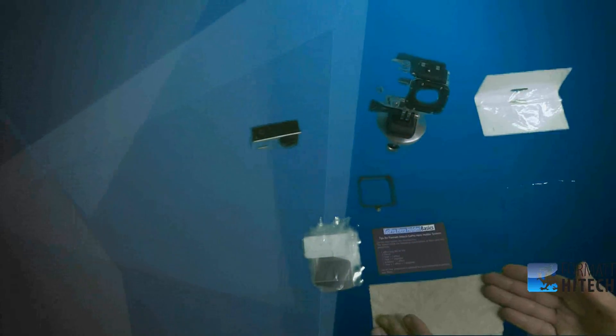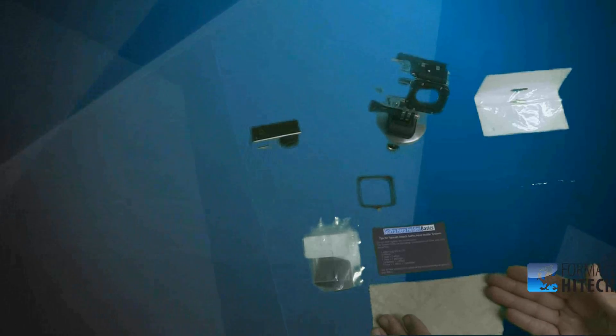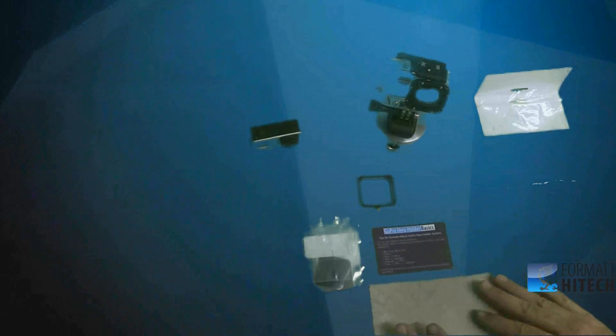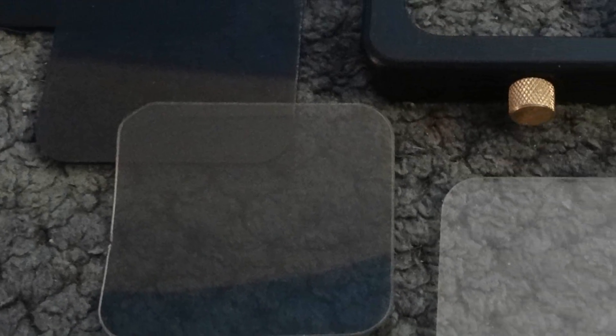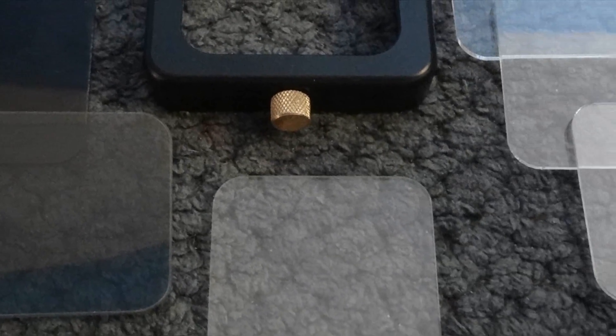Removing the packages, you get the GoPro Hero holder basics and tips card. You do not get a microfiber cloth, which I find is really needed with most filter products. Today you're going to get in the elite kit: the UV clear filter and a polarized filter.